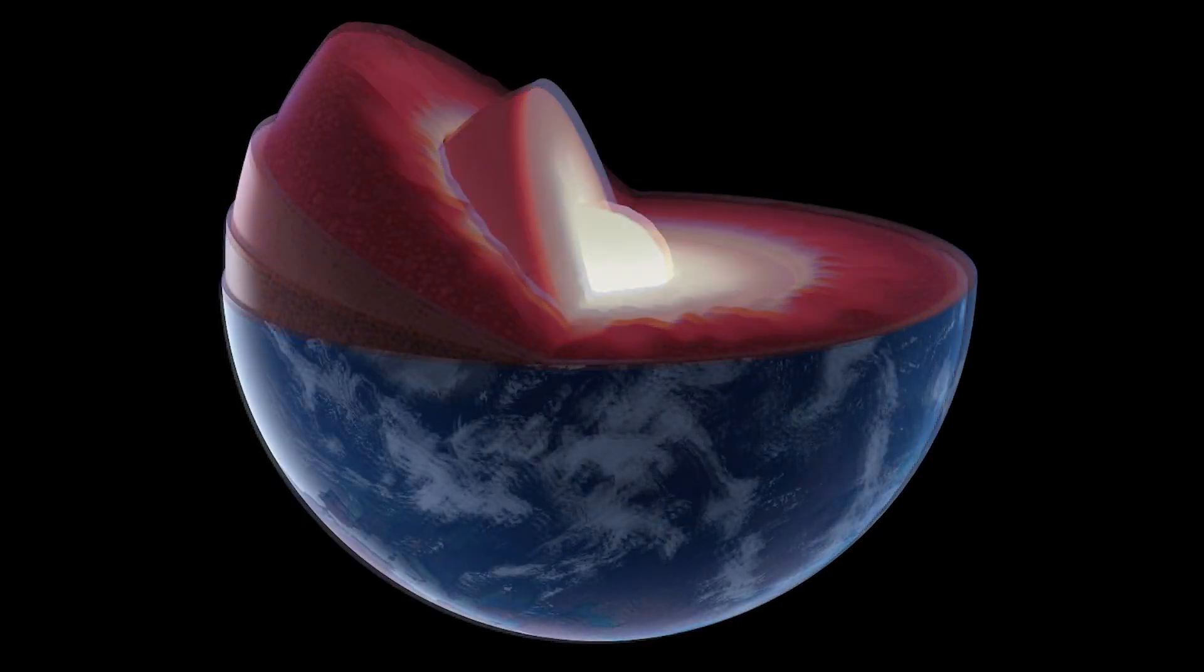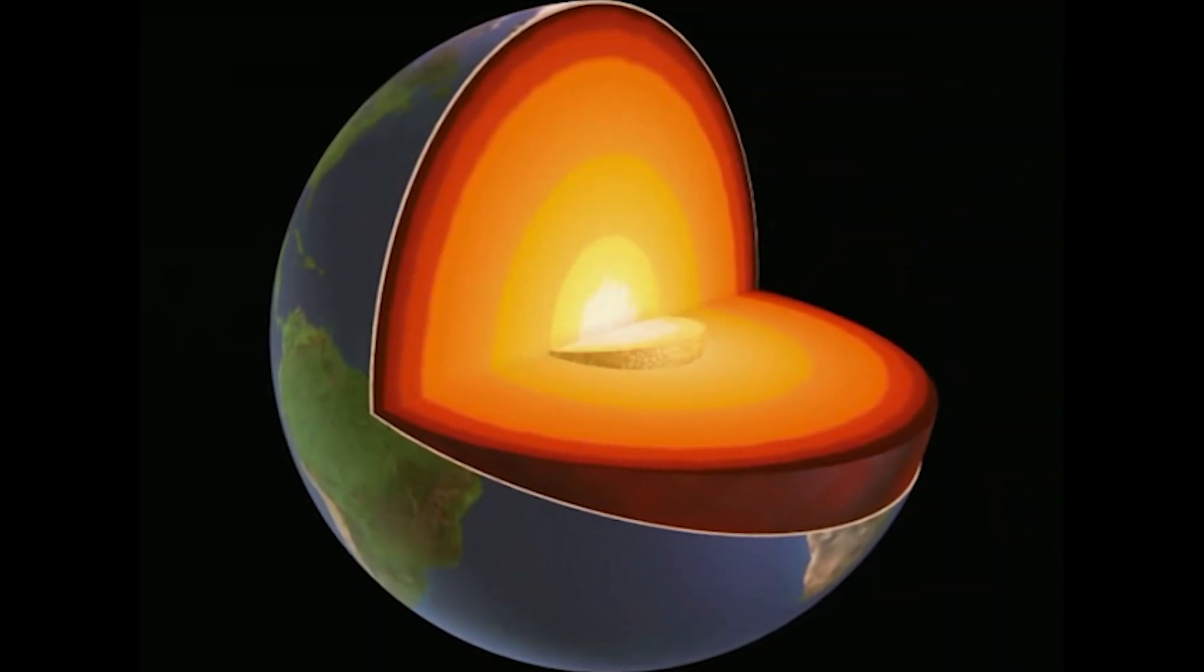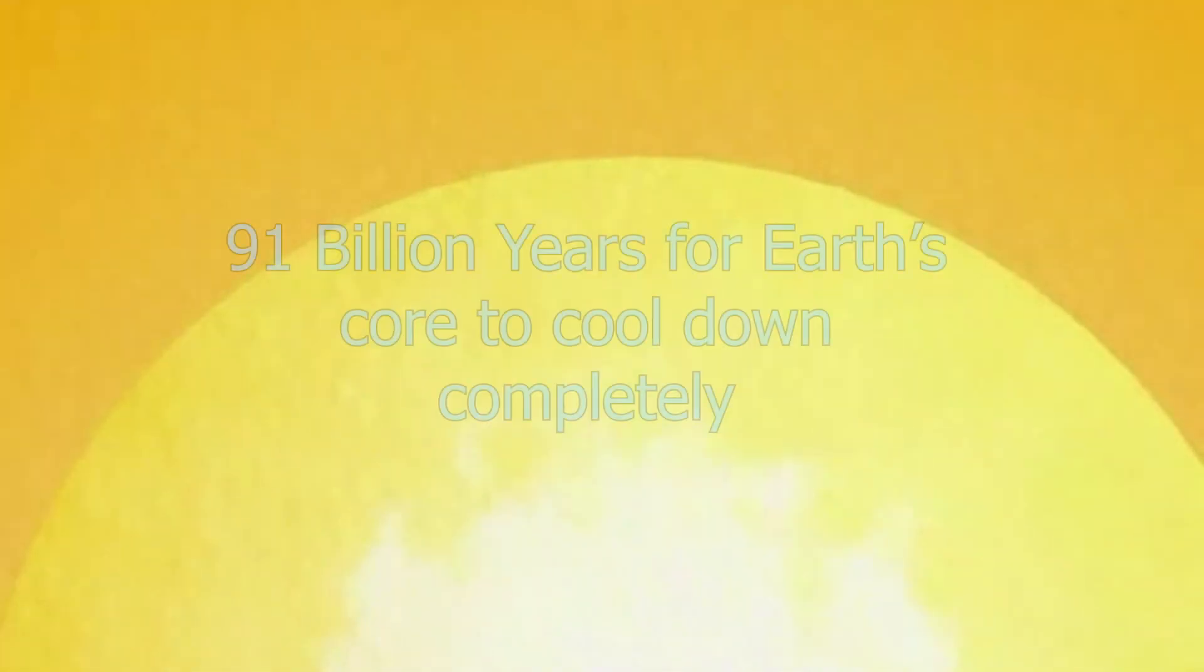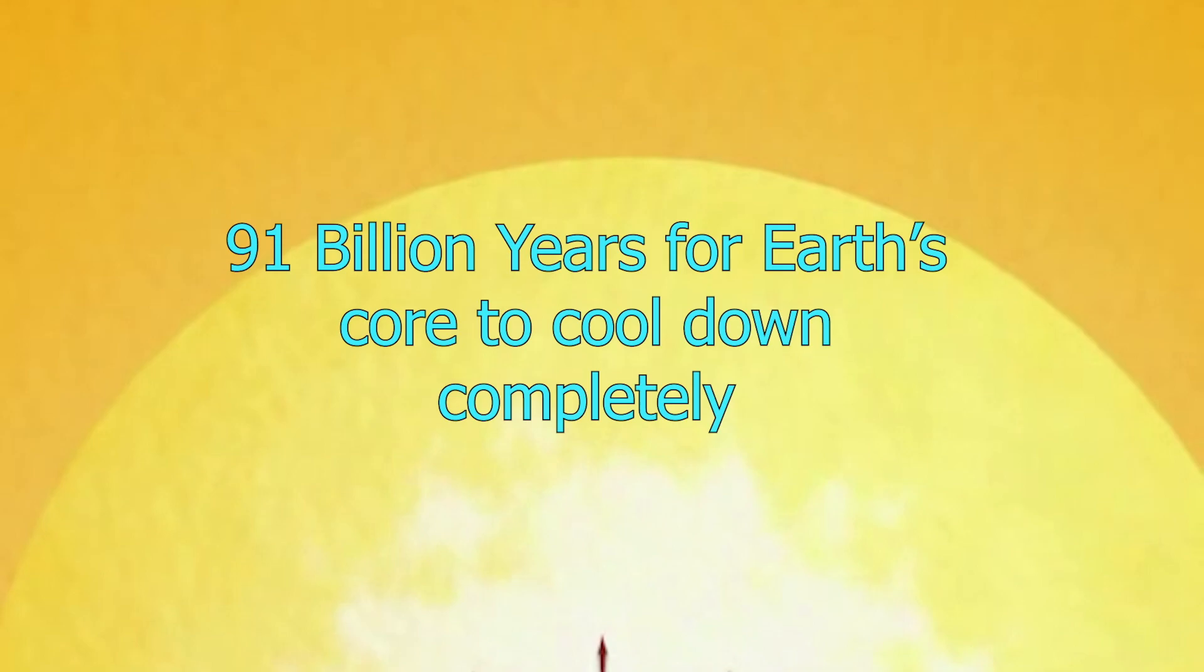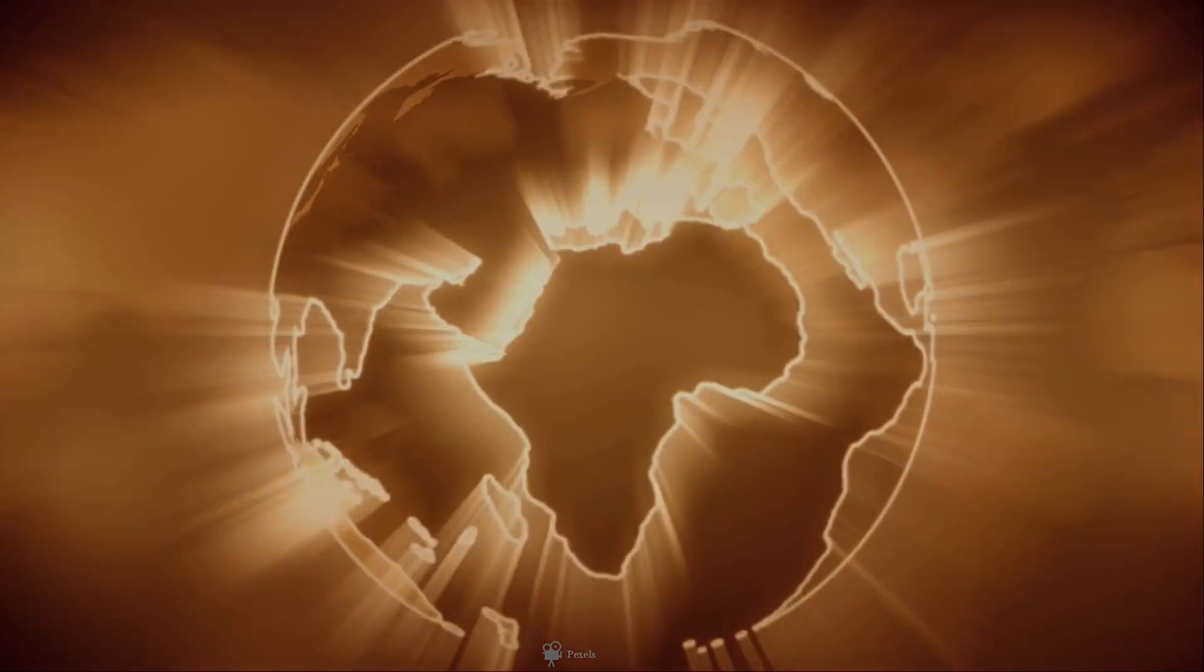So what would happen if the core just cooled down? The Earth's core is not something that is going to be warm forever. Actually, it's cooling down very slowly over time. At its current rate, it will take almost 91 billion years for the core to freeze down completely. But for our imagination, let's increase the rate of cooling so that it loses all of its heat instantly.